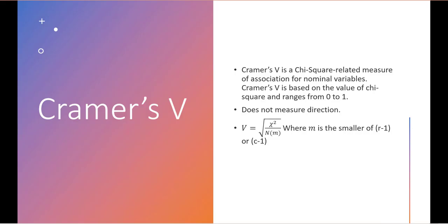Cramer's V is a chi-square-related measure of association for nominal variables. It is based on the value of chi-square and ranges from 0 to 1, measuring strength only — not direction. The formula is the square root of chi-squared divided by (n times m), where m is the smaller of (r − 1) or (C − 1).